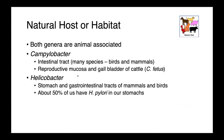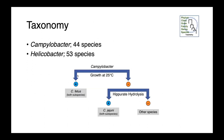Both of these genera are host associated. For Campylobacter, we tend to think of them occurring primarily in the intestinal tract, where they're found in many species of birds and mammals, but we also see them in the reproductive mucosa. Particularly in our ruminant species, we can see Campylobacter fetus subspecies in the vagina, prepuce, and potentially the gallbladder of cattle. Helicobacter are found in the stomach and gastrointestinal tracts, and it's estimated that approximately 50% of people are colonized with Helicobacter pylori. We have 44 species of Campylobacter and 53 species of Helicobacter.